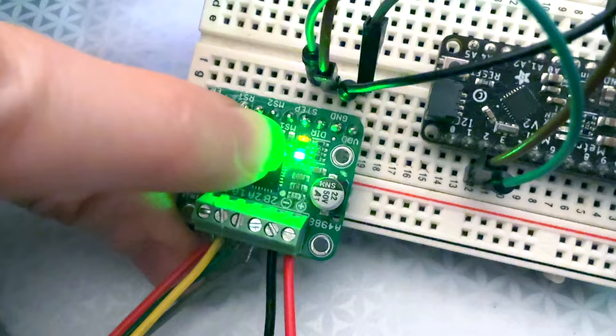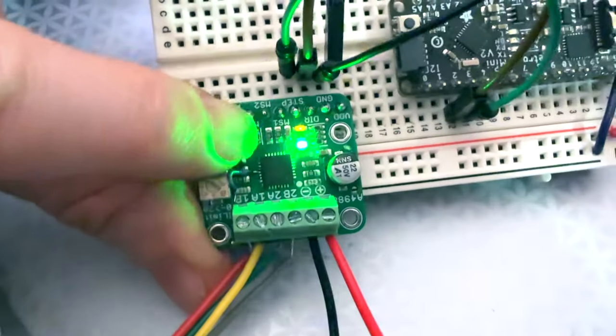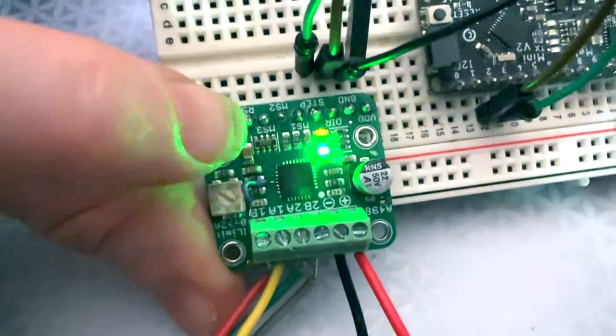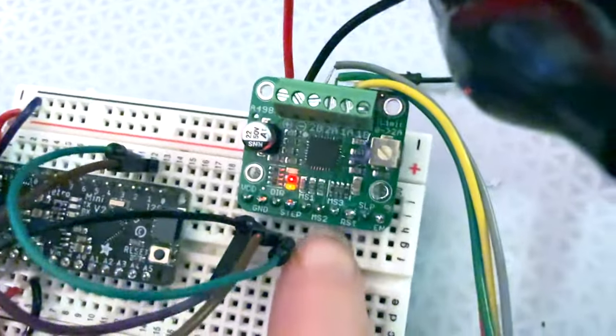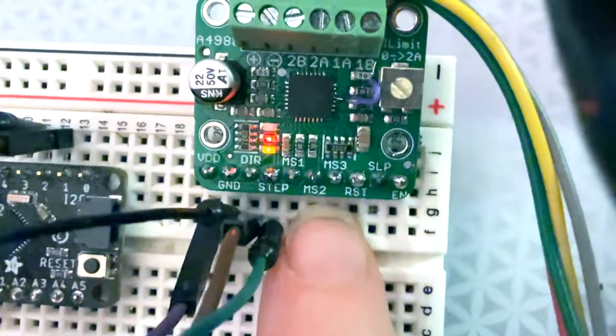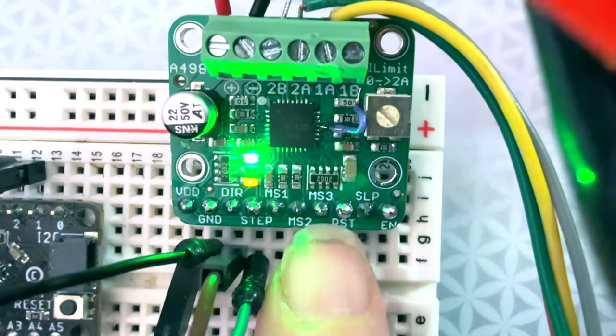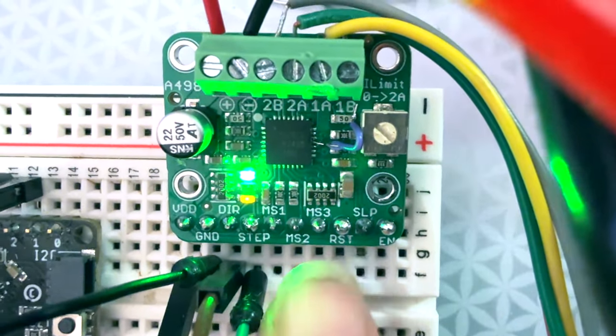You can set the microsteps with these MS1, MS2, MS3 pins. I have it set to, let me turn around so I can read a little easier. By default, I have these pull-downs, or pull-ups, I don't remember. I've set it to the highest 16 microsteps. There's also reset, sleep, and enable.